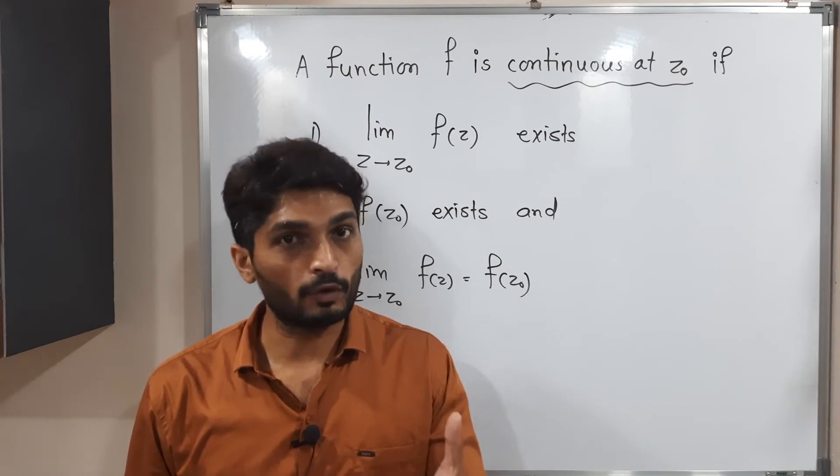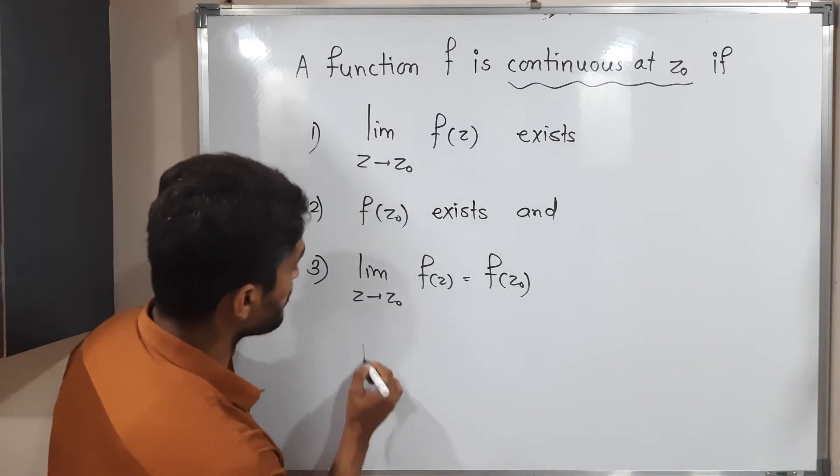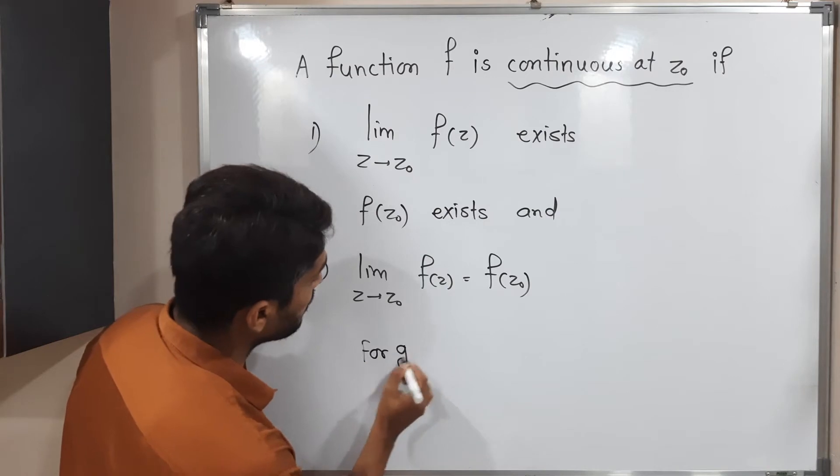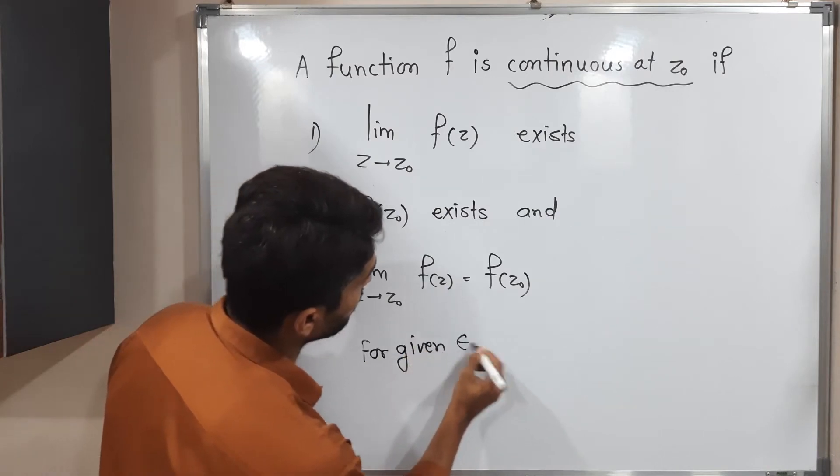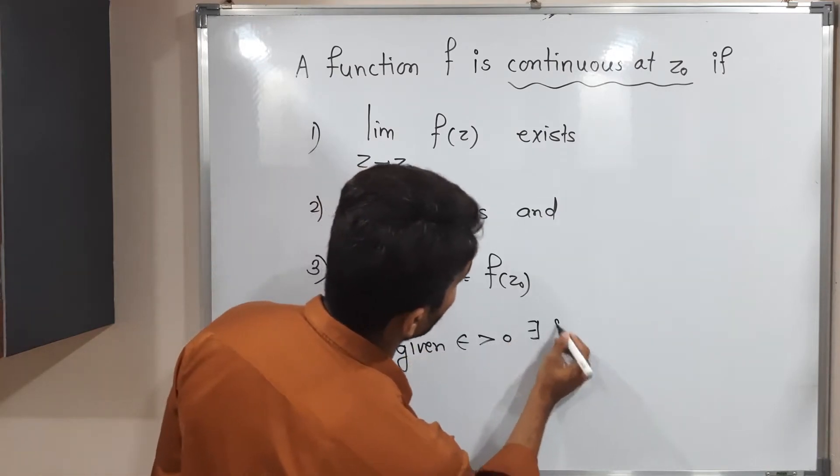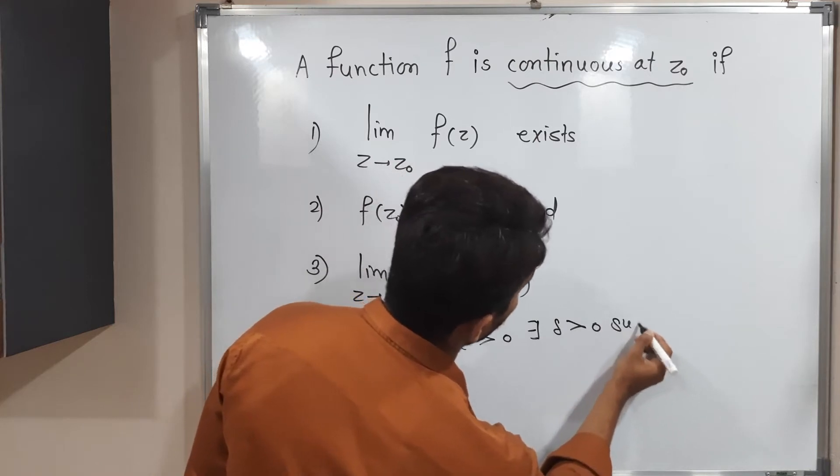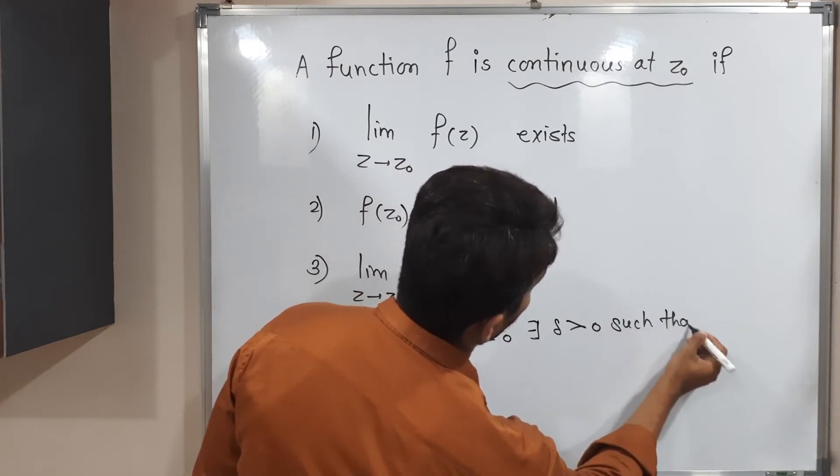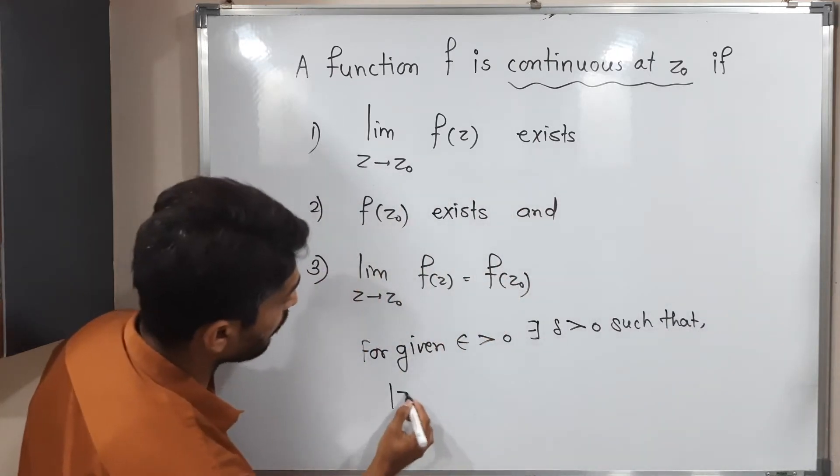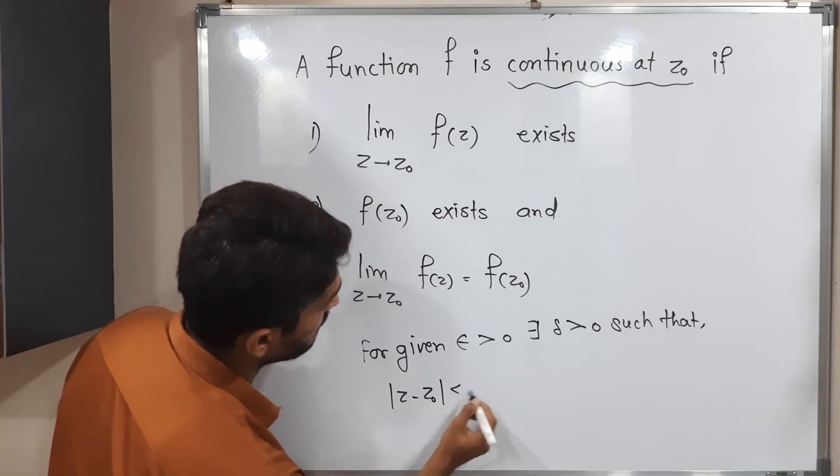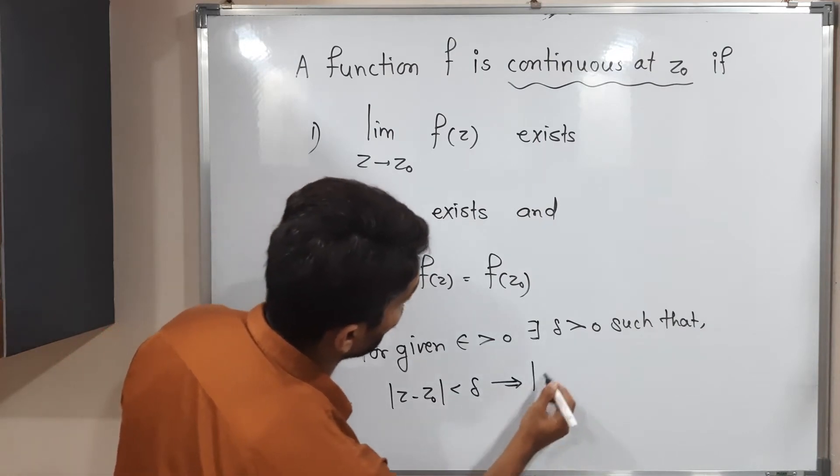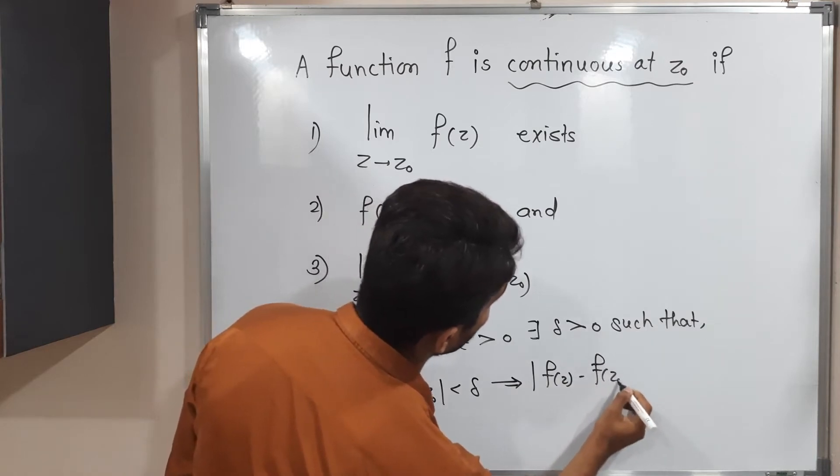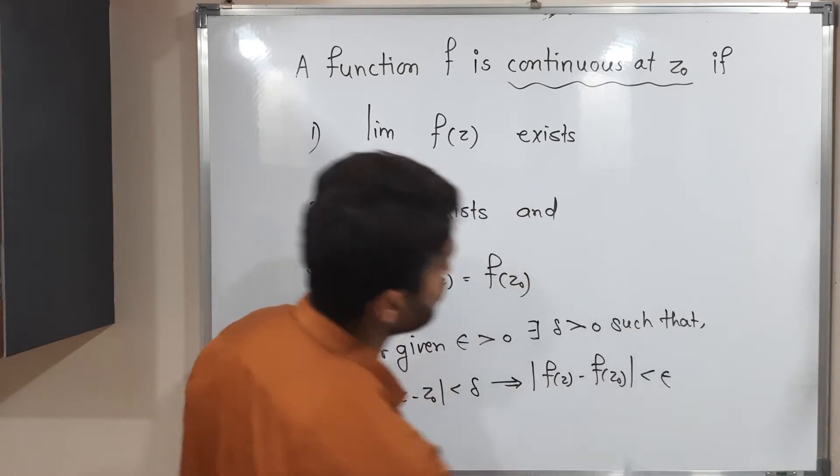So can you tell me for complex-valued what we should write here? The same definition: for given epsilon greater than 0, there exists delta greater than 0 such that mod z minus z naught less than delta implies mod f of z minus f of z naught less than epsilon.